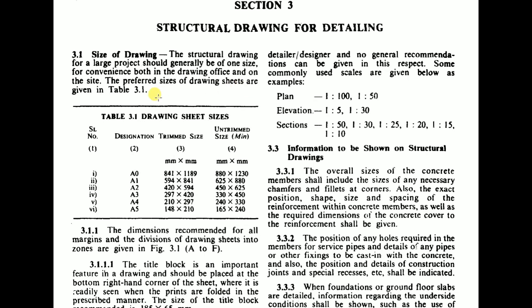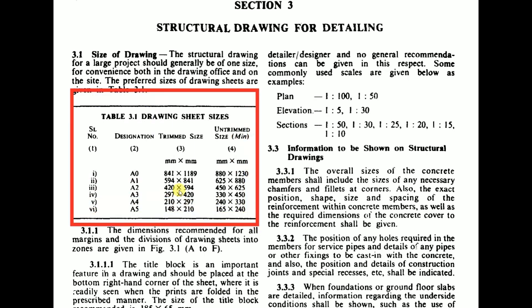The preferred sizes of drawing sheets are given in Table 3.1, which lists sizes A0, A1, A2, A3, A4, and A5. We all know the A4 paper size, but here we have larger sizes starting from A0. The choice depends on the project scale — a small residential project uses a smaller sheet while a larger commercial project requires bigger paper. The paper dimensions are given in the table, and the dimensions recommended for all margins and divisions of drawing sheets into zones are given in Figure 3.1.